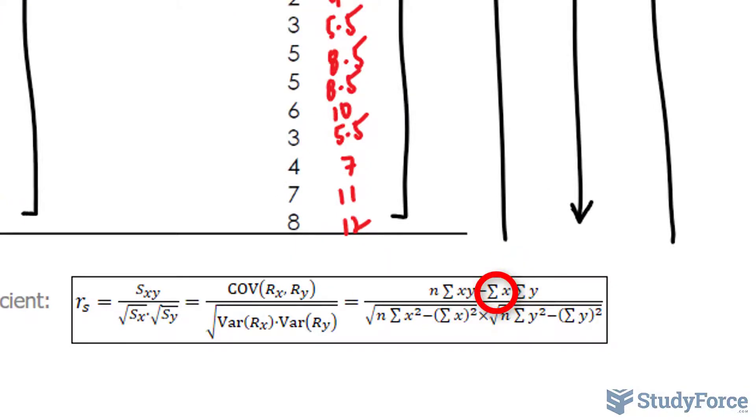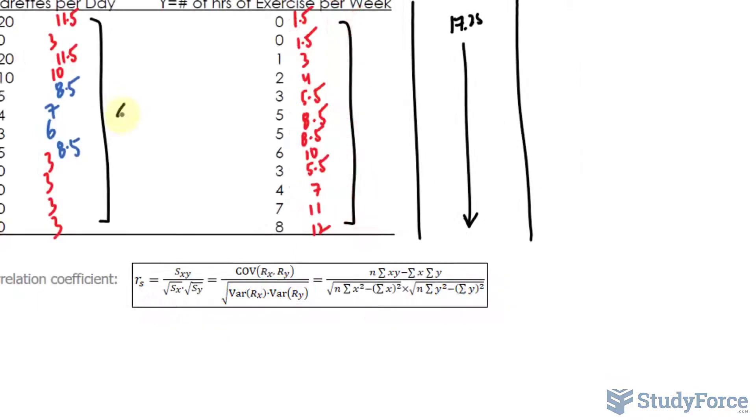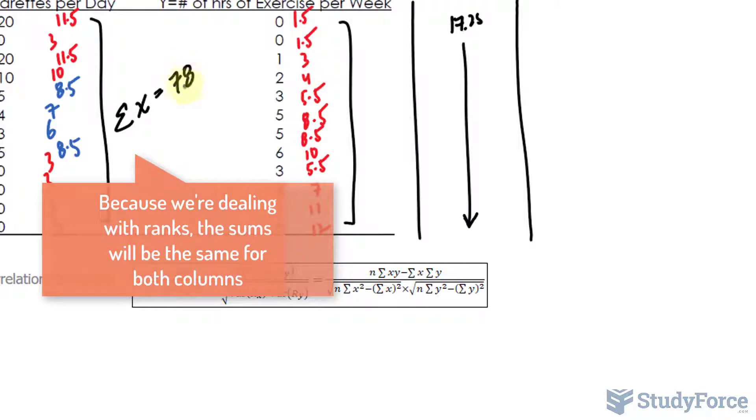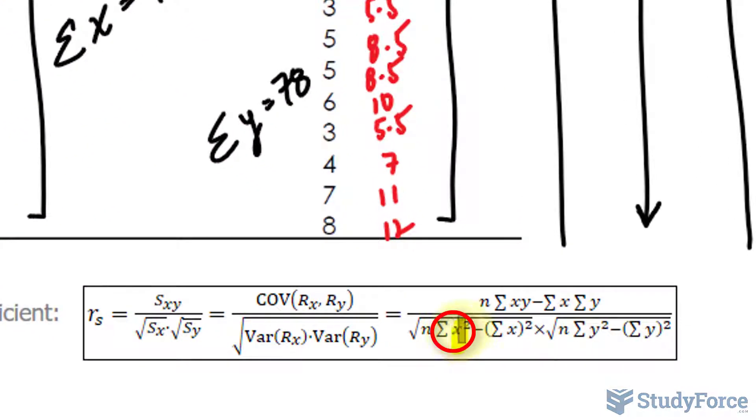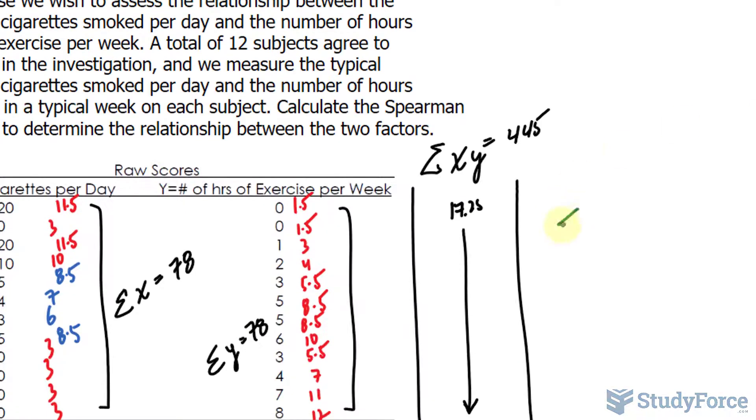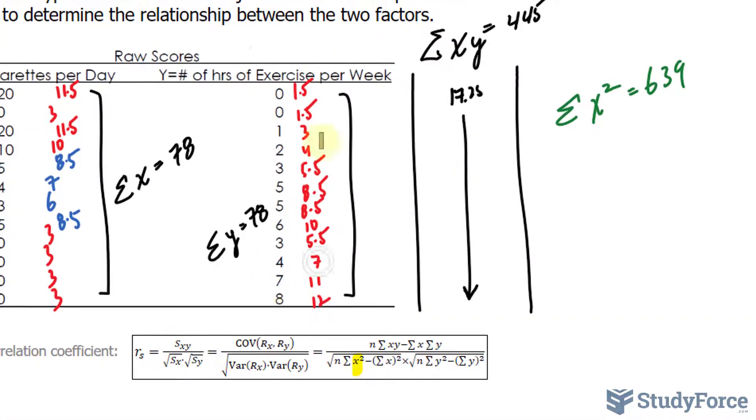What else does this formula call for? It calls for the sum of all x ranks. Adding up all these ranks should give you a sum that is 78. Adding up all of these ranks will give you a sum of 78 as well. The formula also calls for squaring each of the ranks and summing those numbers up. Let me write that down over here. The sum of all the x ranks raised to the power of 2 is 639. And the same is required for these ranks. That is shown right here. You should end up with a value that's 648.5.